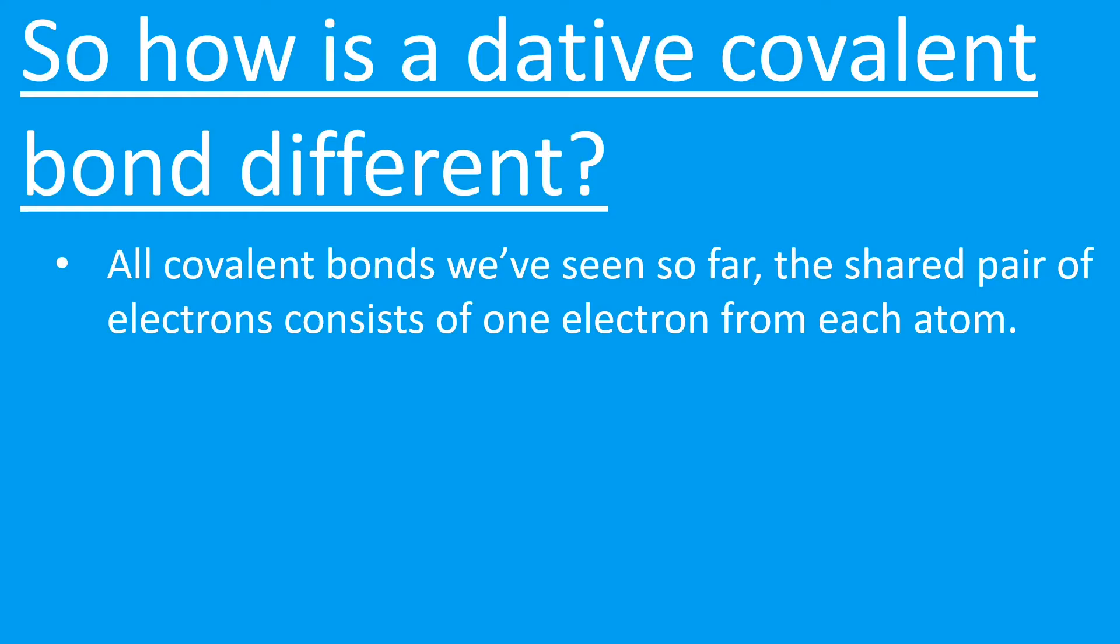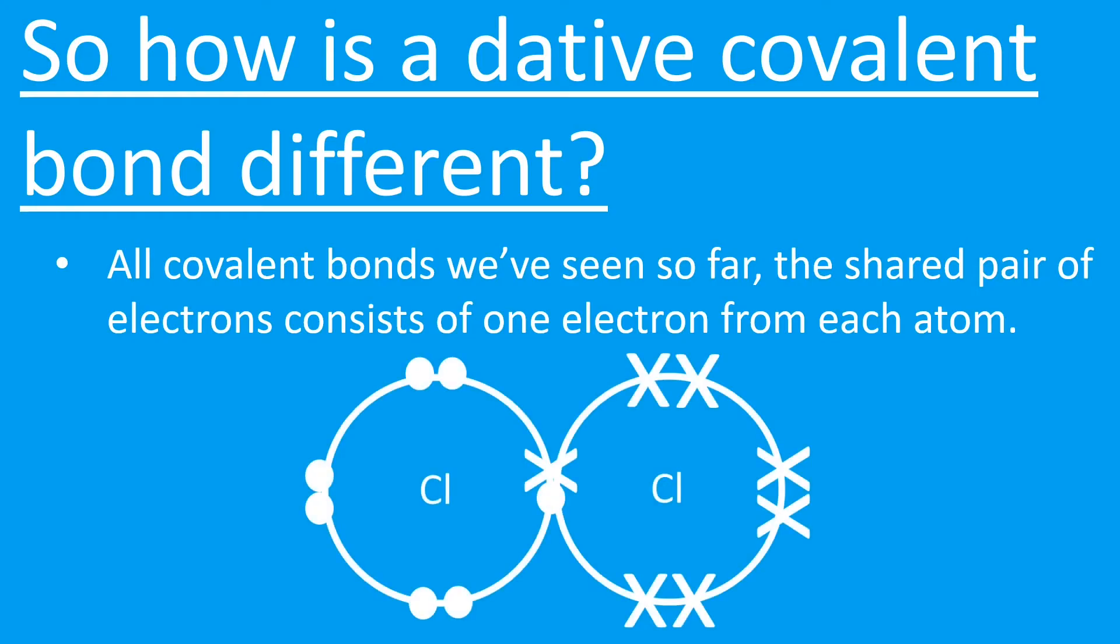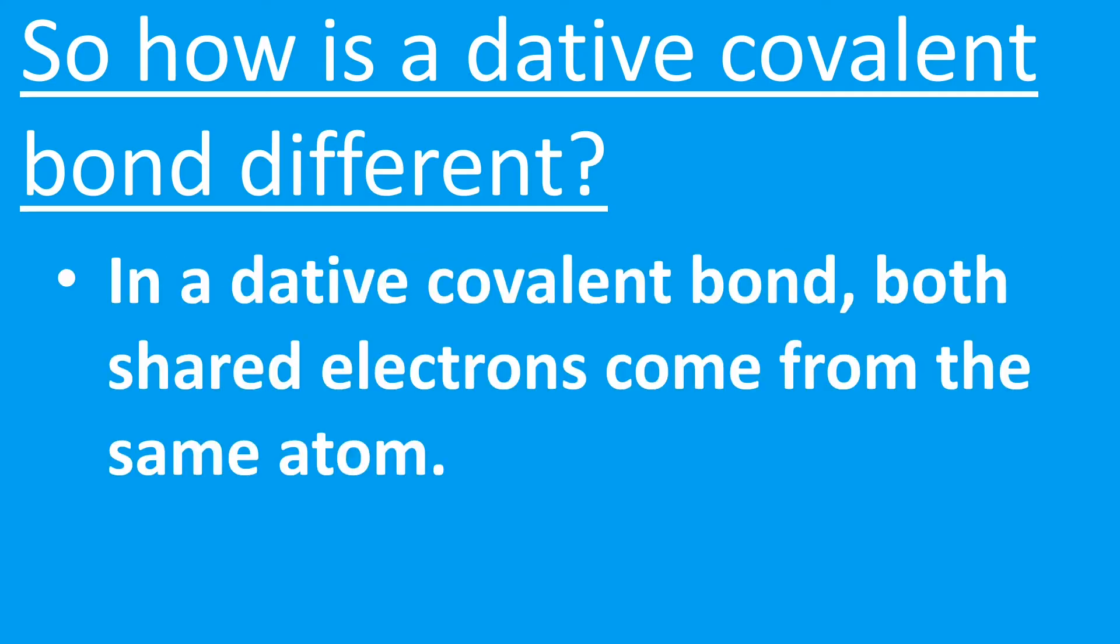If we look at this covalent bond between two chlorine atoms in a chlorine molecule, it consists of one dot and one cross. We can see that the crosses have come from the chlorine atom on the right and the dot has come from the chlorine atom on the left, so it's one electron from each atom. In the case of a dative or coordinate covalent bond, both the shared electrons are coming from the same atom.